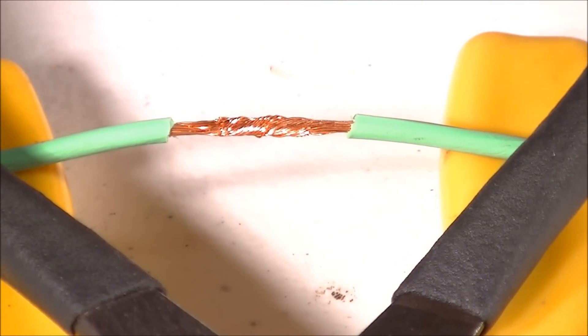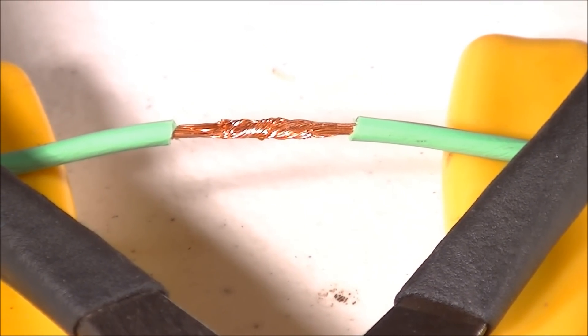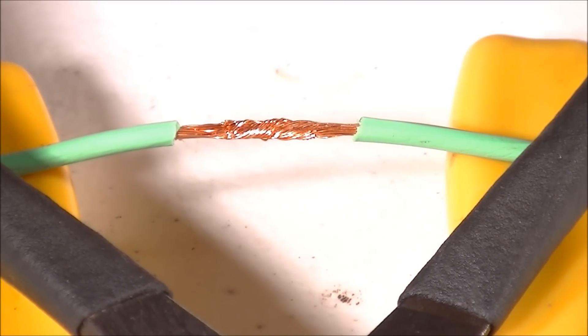What this is doing is forming sort of a bridge of molten solder between the tip and wire, essentially giving the tip a wider point of contact with the wire allowing the heat to transfer to the wire much quicker.